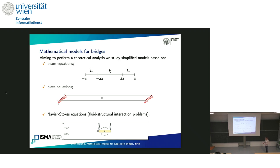If we want to suggest something to improve stability, we first need to understand the behavior. This will not be the aim of my talk today, but some remarks are in order. I will give these remarks about the origin of torsional oscillations, starting from plate models. I will also consider some results about beams, and at the end, I will conclude with something about Navier-Stokes equations.